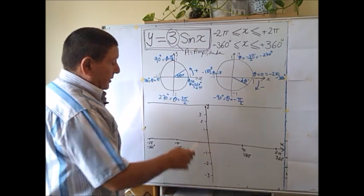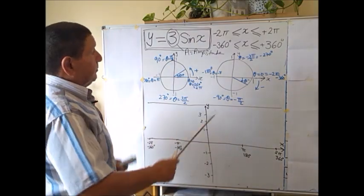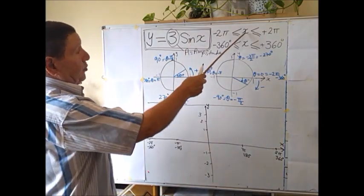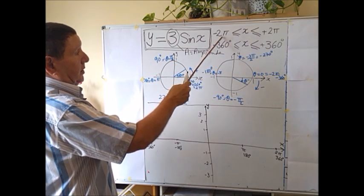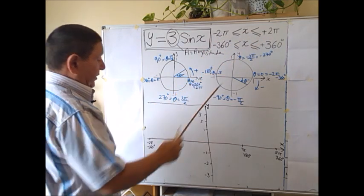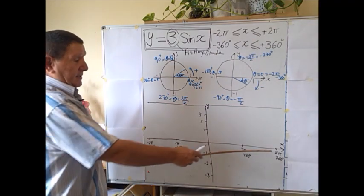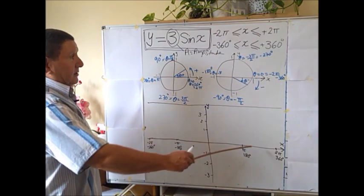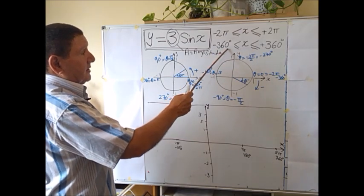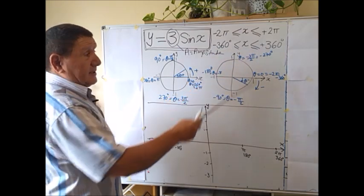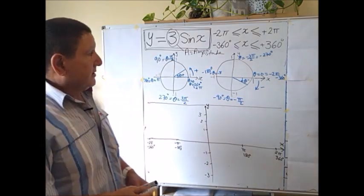We are going to plot this function over the domain x between -2π radians and +2π radians, as shown on the x-axis. In degrees that is -360° to +360°, if you are using degrees rather than radians.